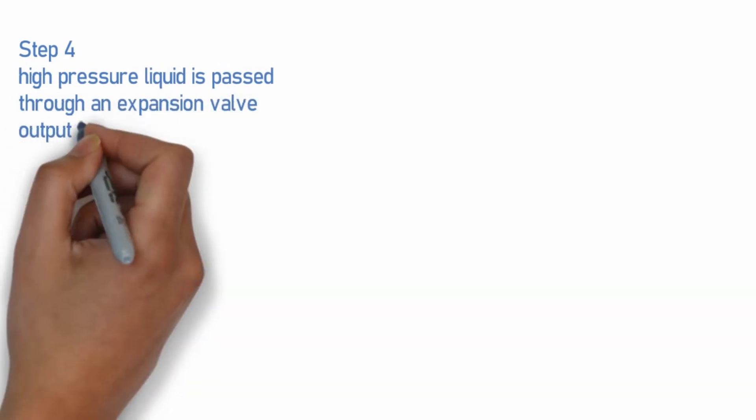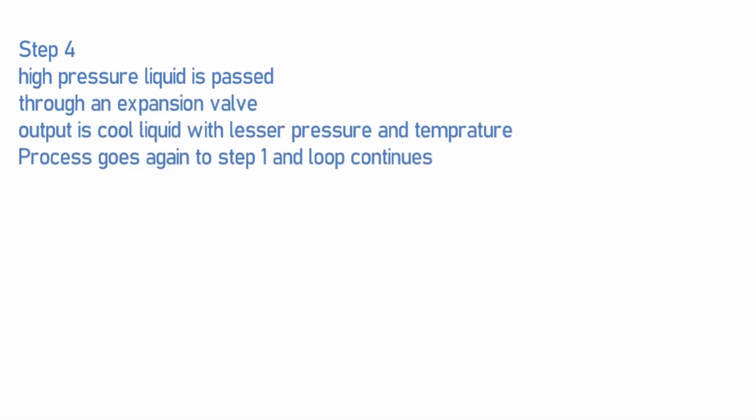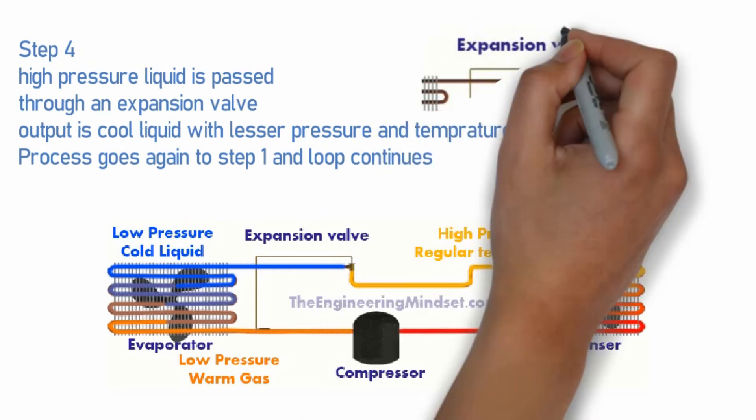Step four: high pressure liquid is passed through an expansion valve. Output is a cool liquid with lesser pressure and temperature. And this process again goes to step one and the loop continues.